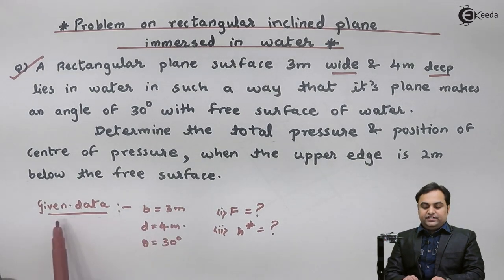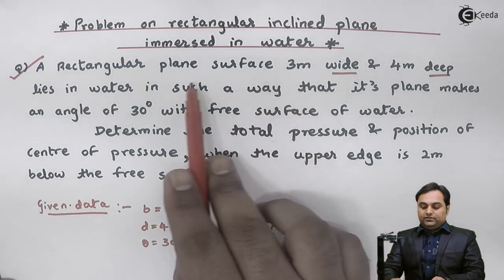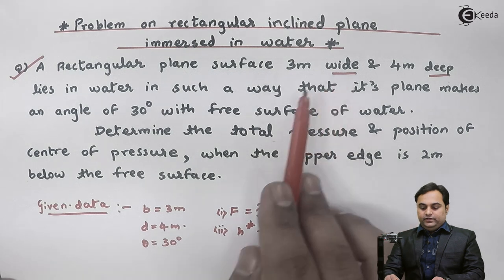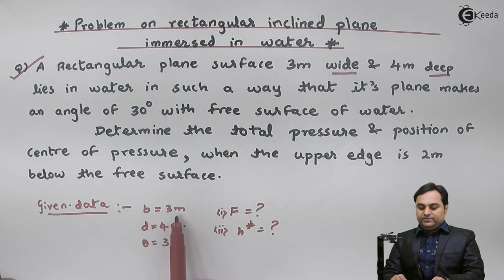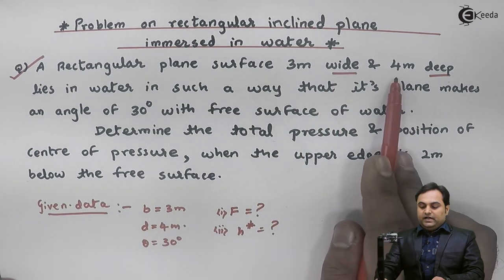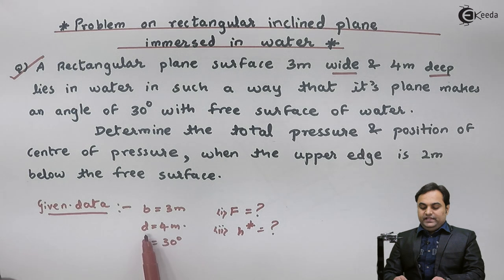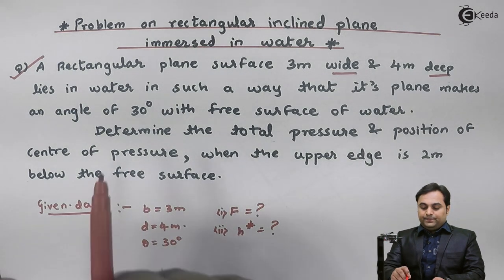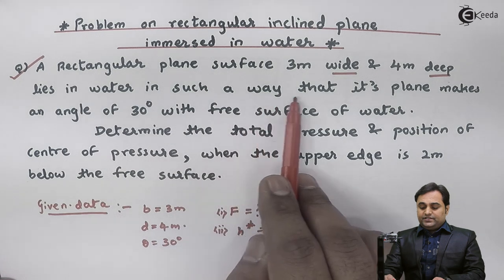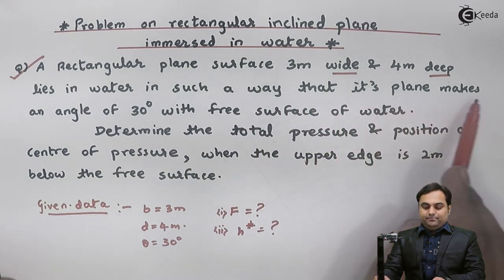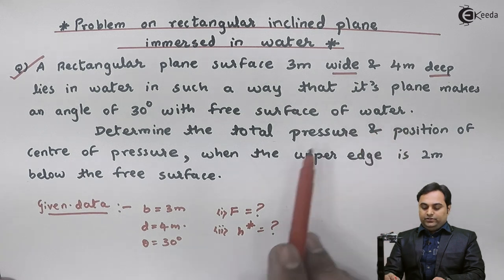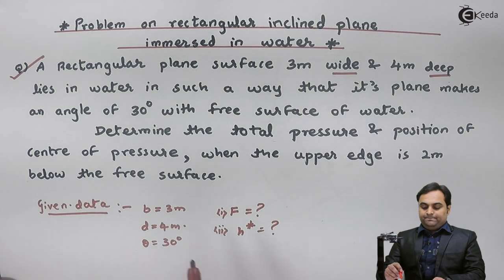From this question I have written the data: since the rectangular plane surface is 3 meter wide, b (width) is 3 meter, and 4 meter deep, so d is equal to 4 meter. It lies in water such that its plane makes an angle of 30 degrees with the free surface of water, so theta is 30 degrees.